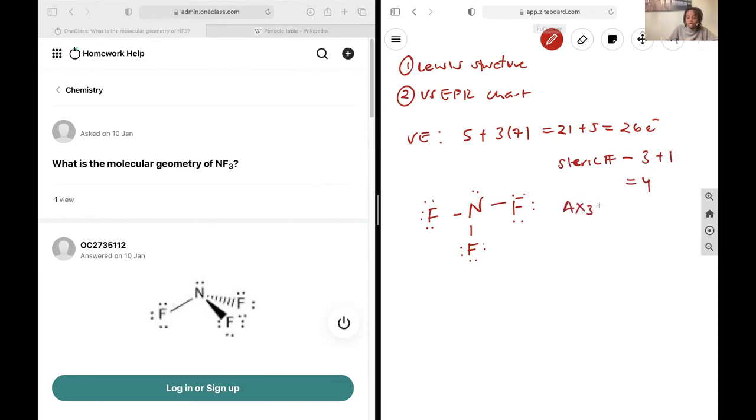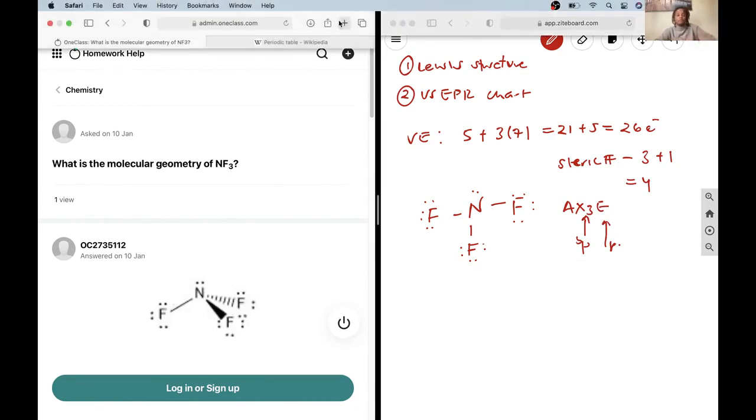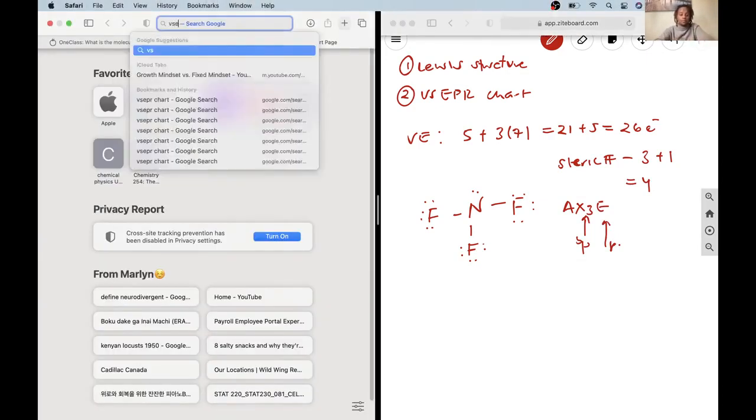I should note that the notation will be AX3E because I have 3 bonding pairs here and 1 lone pair here. And so, when I go to the VSEPR chart...